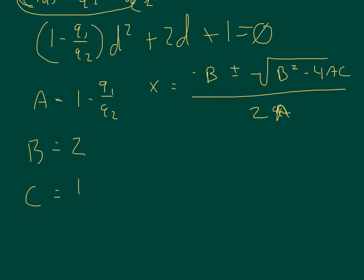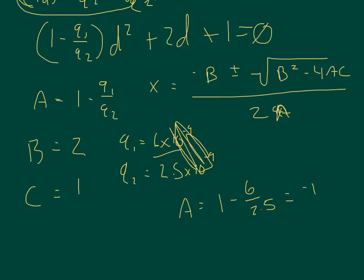Now remember that Q1 is equal to 6 times 10 to the negative 9 coulombs. And Q2 is negative 2.5, but we accounted for the negative by subtracting our electric field. We accounted for that negative charge by subtracting, so we're just going to use the magnitude of Q2, 2.5 times 10 to the negative 9. When you divide those things out, the 10s to the negative 9ths cancel out, so you get basically 6 over 2.5. And so A is equal to 1 minus 6 over 2.5, and that's equal to negative 1.4.